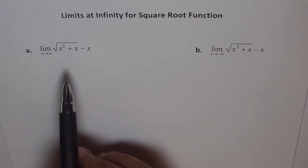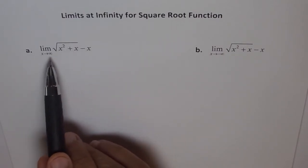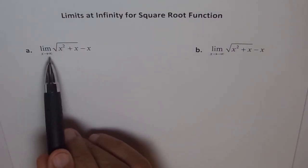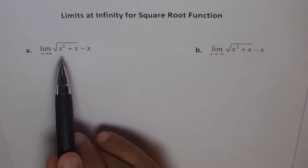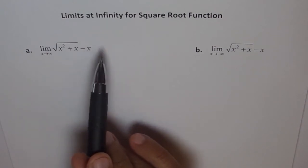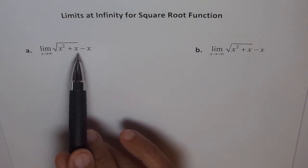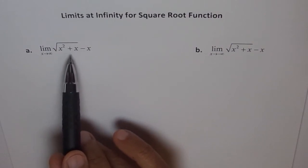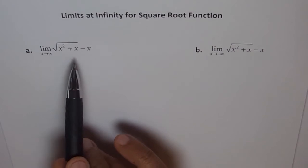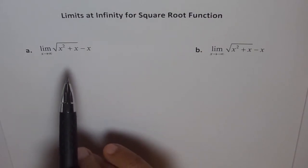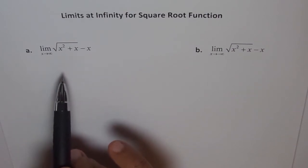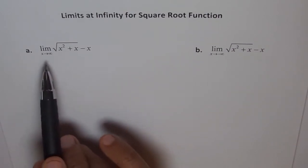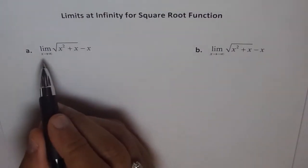Whenever you have a square root function, it seems as if this value will always be growing to infinity, but we have a minus x here, so that will be pulling it down. Therefore, there is a possibility that the function may not arbitrarily increase to infinity — it may give you a limit. The best approach for a square root function, as we discussed, is to rationalize. You normally don't see something like this and think about rationalization because the fraction part is missing, but assume there is one underneath — everything over one.